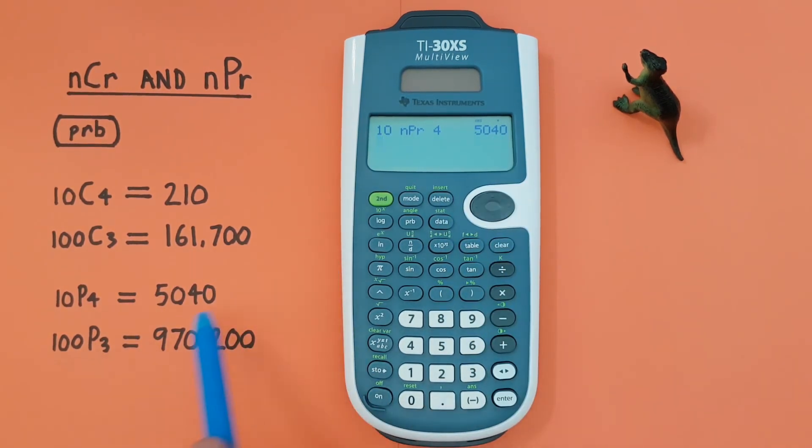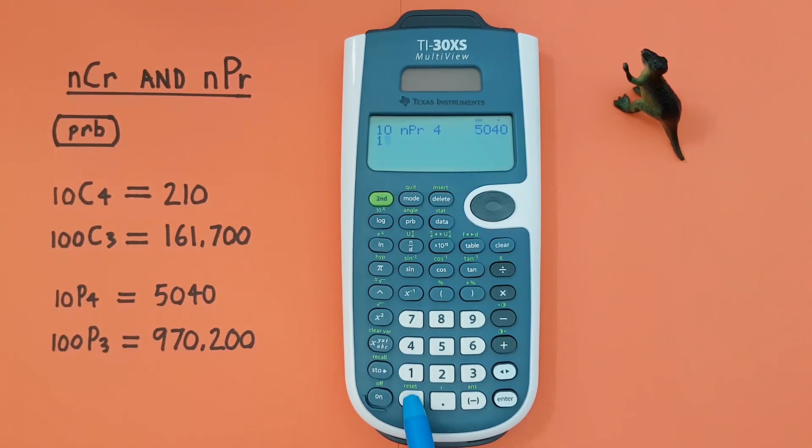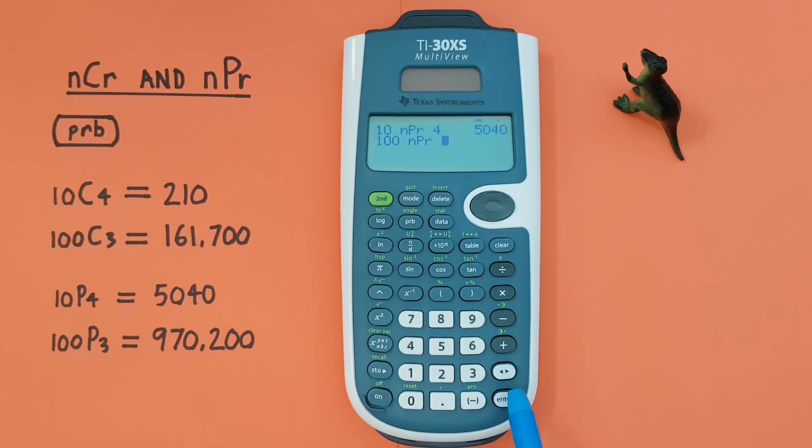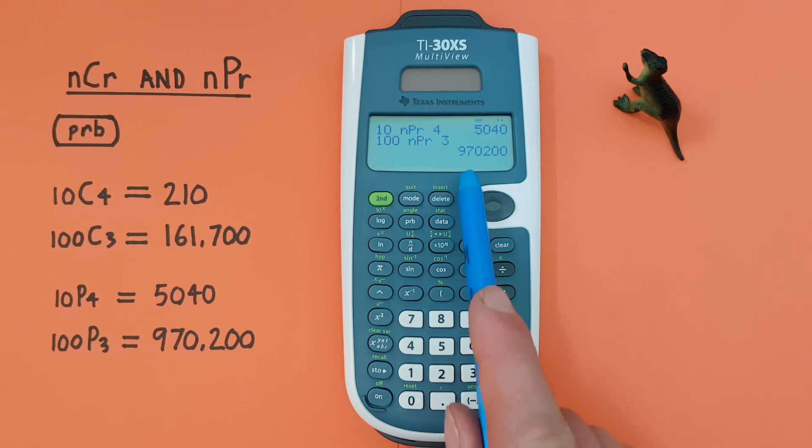Again, if we do 100 choose 3, we enter the 100 first, probability, and press enter, and see we get 970,200.